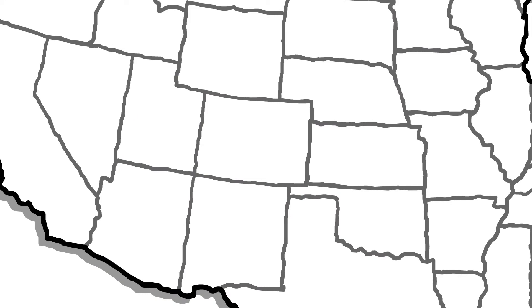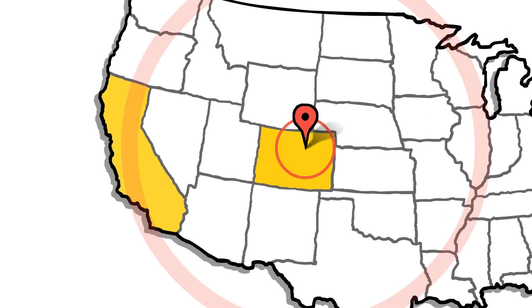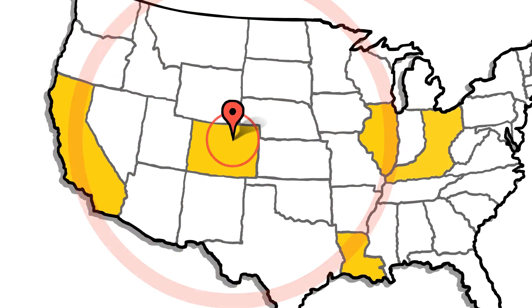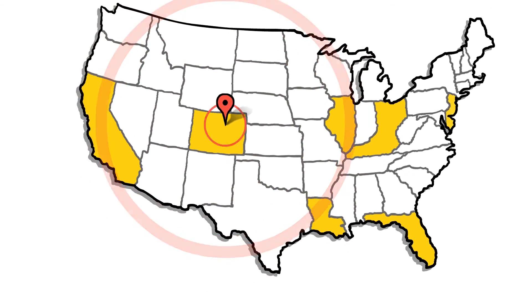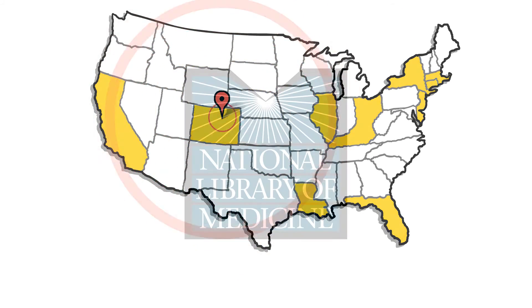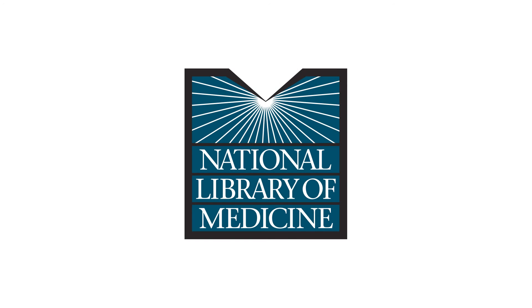So you see, Regenexx is not magic stem cell pixie dust. It was the first stem cell therapy for orthopedic problems in the United States, and it's backed by the most research. In fact, every patient is a part of a registry that tracks their outcomes over time. These results have been the source for many studies and have been published in the National Library of Medicine.